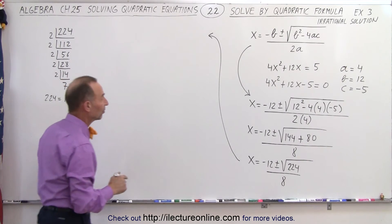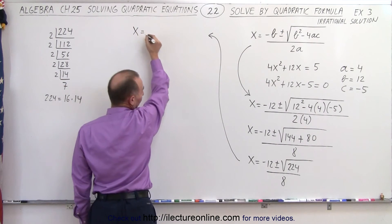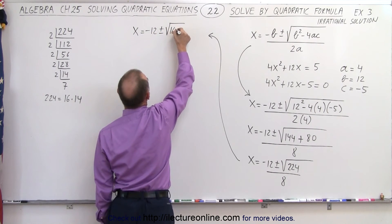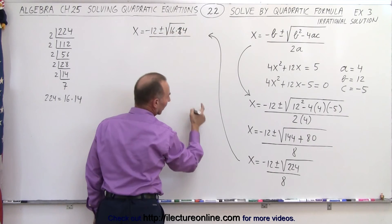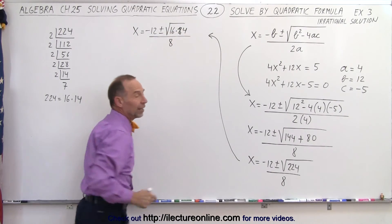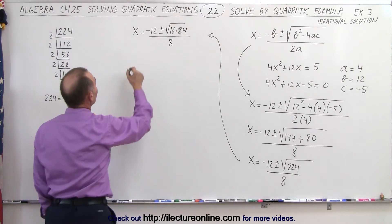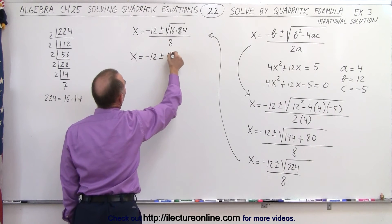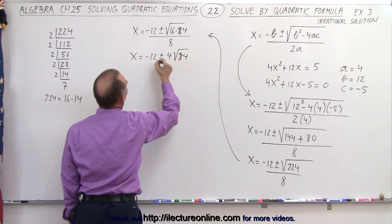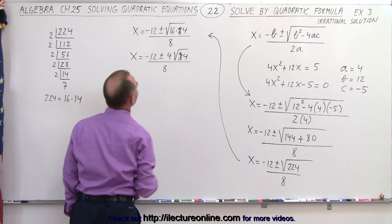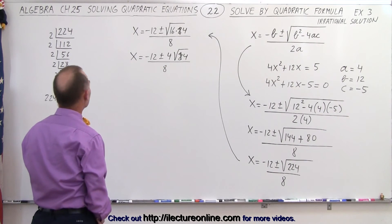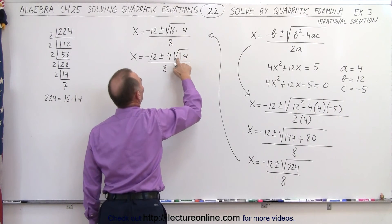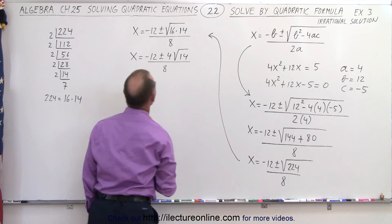So I'm going to write this as x = −12 ± √(16 × 14), all divided by 8. That way I can take the square root of 16. So x = −12 ± 4√14, all divided by 8. — Wait, not 24, that should be 14. There we go, that's better.